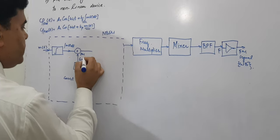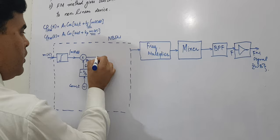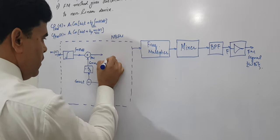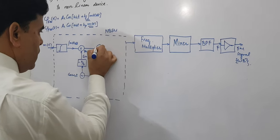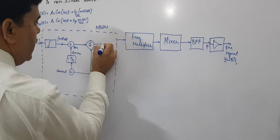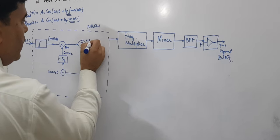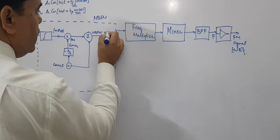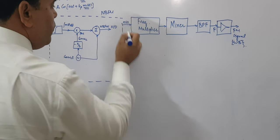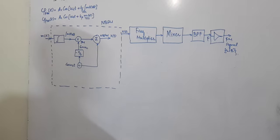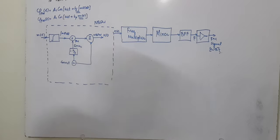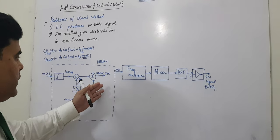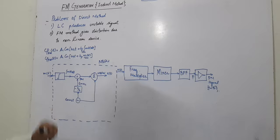The output of the balanced modulator and the local oscillator signal are combined using a summer. The result is your narrow band FM signal x(t). This signal x(t) is then fed as the input to the frequency multiplier. This is the indirect generation of the FM signal.